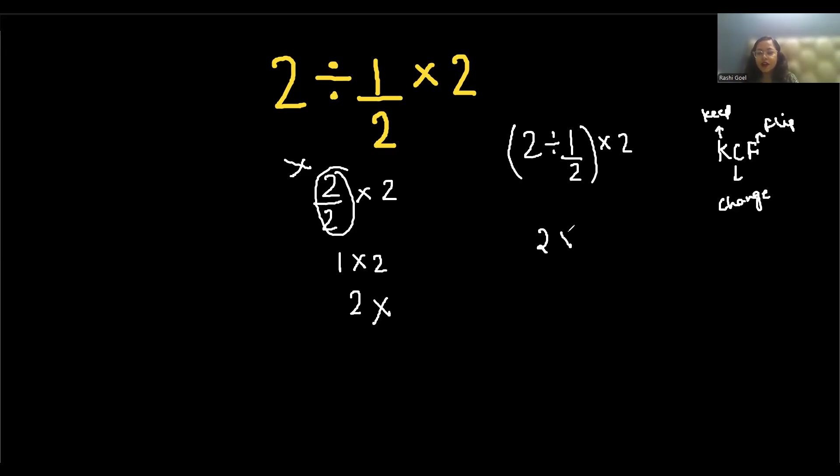So that means keep the left hand, change the symbol of division to multiplication and flip the right hand side and then multiply 2. So it becomes 2 times 2 by 1 times 2 which is 2 times 2 is 4 and 4 times 2 is 8.